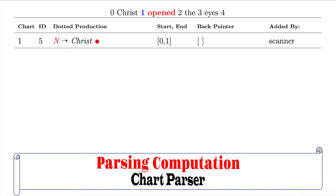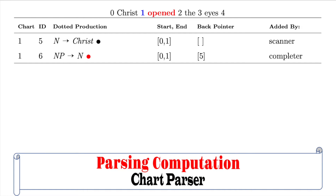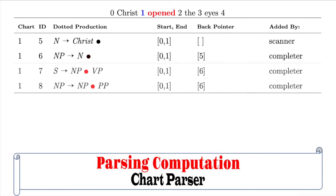Now the dot of the production of ID number 2 has shifted to the end of the production, that is NP derives N dot, because the completer operator was applied. It means that the grammar symbol N can be completed because it has encountered the input word Christ. This in turn completes the production NP derives N. This is accomplished by ID number 5, and this ID number is stored in the back pointer column. Since the production NP derives N has been completed, we can now move the dot before NP in the previous chart to the right of NP in chart 1. There are two of them: ID number 1 and ID number 4 of chart 0.